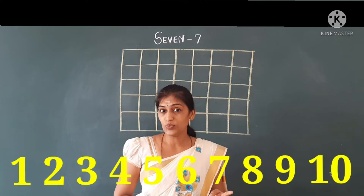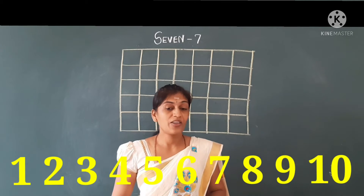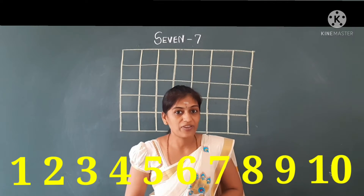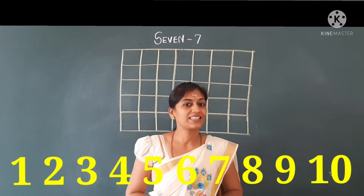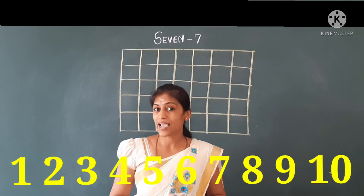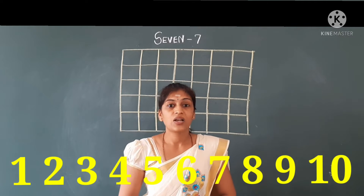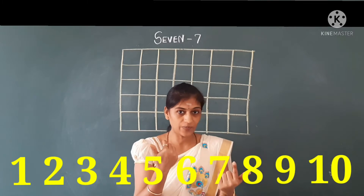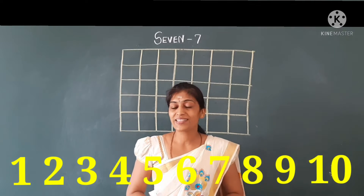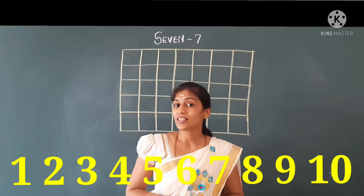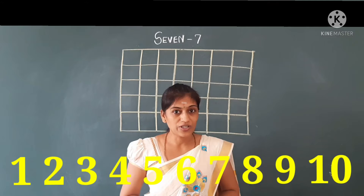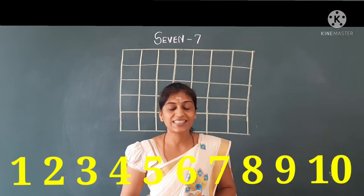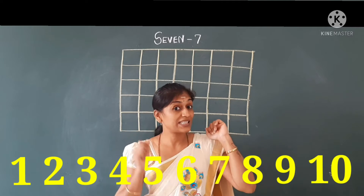1, 2, 3, 4, 5, 6, 7, 8, 9, 10. Now children, we will read the numbers going to 10 together. Together we will read now: 1, 2, 3, 4, 5, 6, 7, 8, 9, 10.